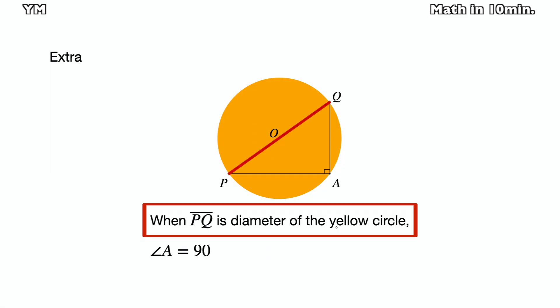If the line PQ is a diameter of the circle, then arc PQ is the hemicircle. Then as angle POQ is 180 degrees, its inscribed angle A is a right angle.